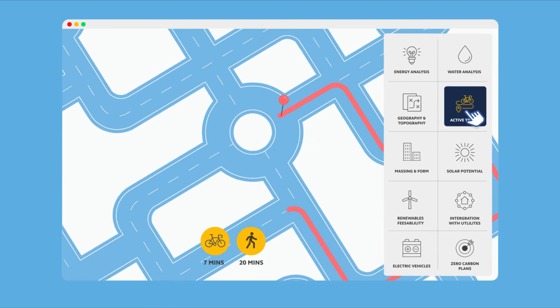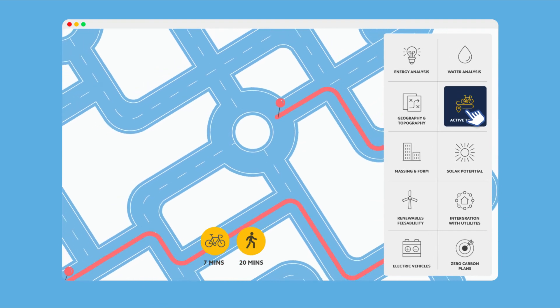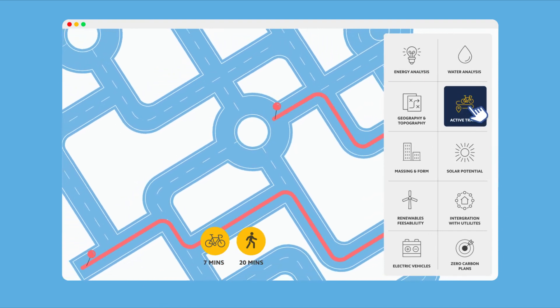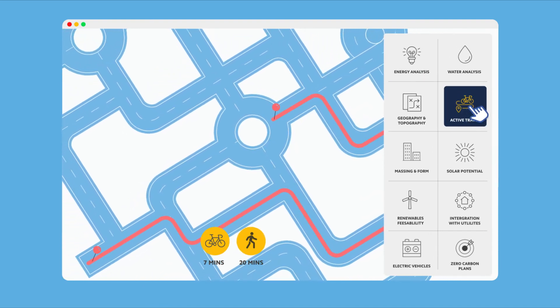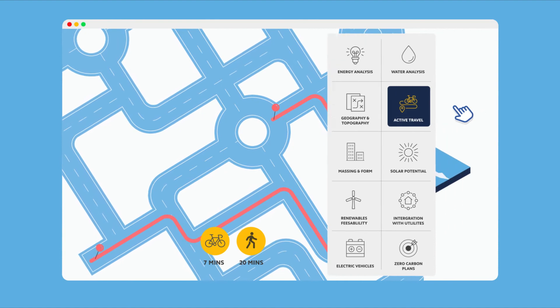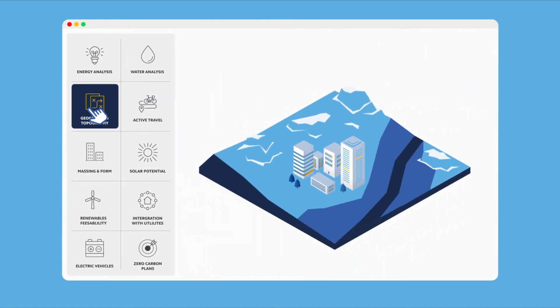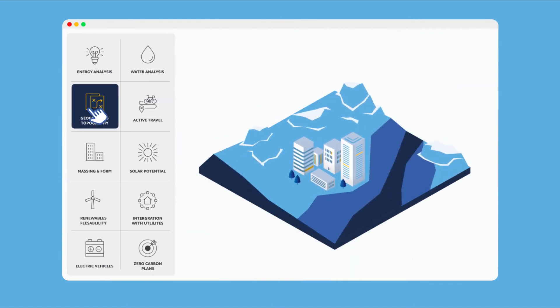Assess active travel routes and create 20-minute cities. Easily add adjacent buildings, terrain and trees to model changes to shade and solar heat gain.